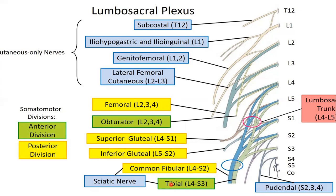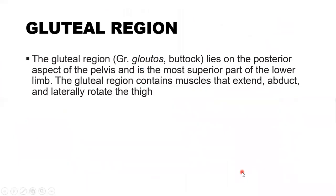The gluteal region — gluteus means buttock — lies on the posterior aspect of the pelvis and is the most superior part of the lower limb. The gluteal region contains muscles that extend, abduct, and laterally rotate the thigh, although a few muscles will medially rotate the thigh. The gluteal region is specialized for extension, abduction, and lateral rotation of the thigh.